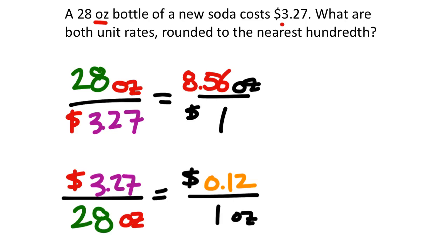If you're looking at how many ounces you can get per dollar, the first rate — ounces per dollar — would be the more appropriate one to use.